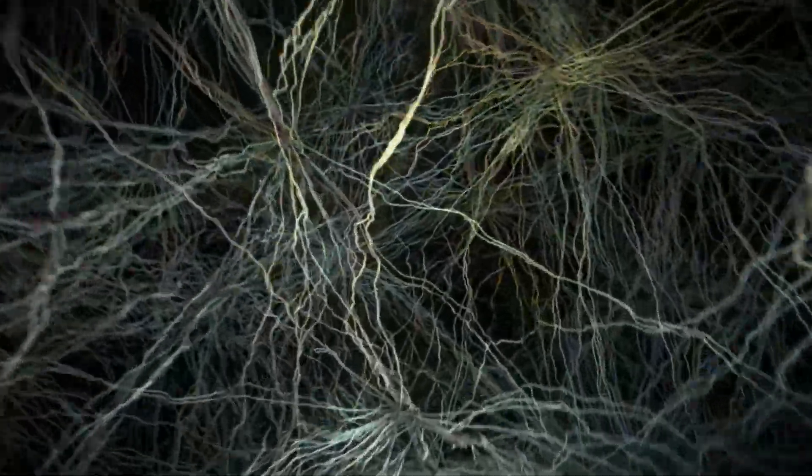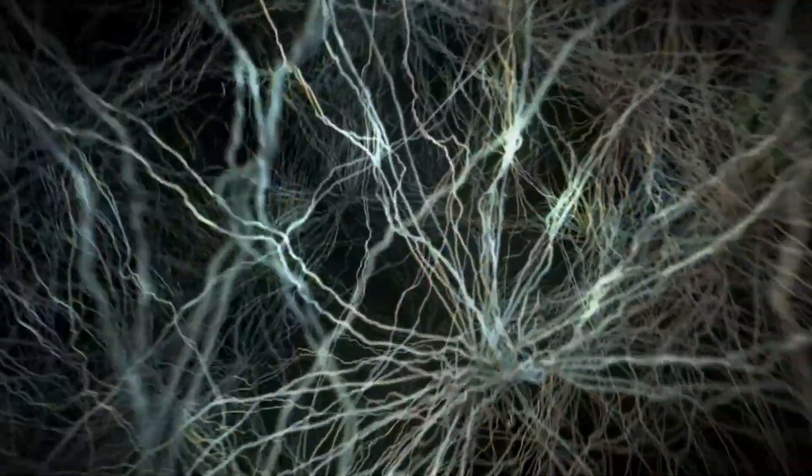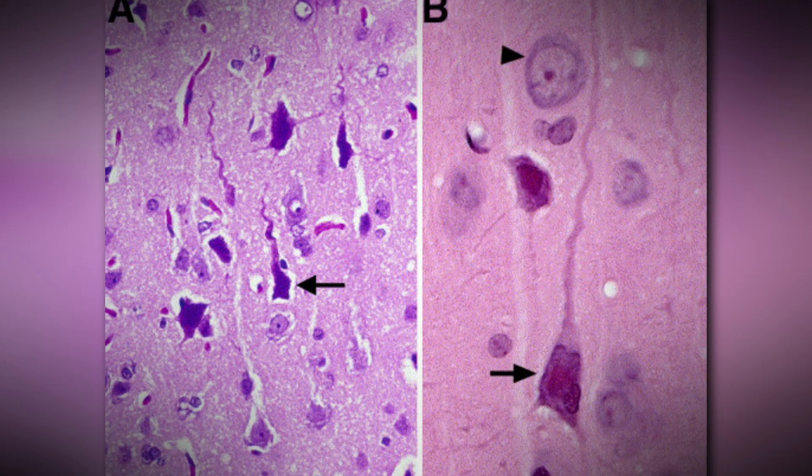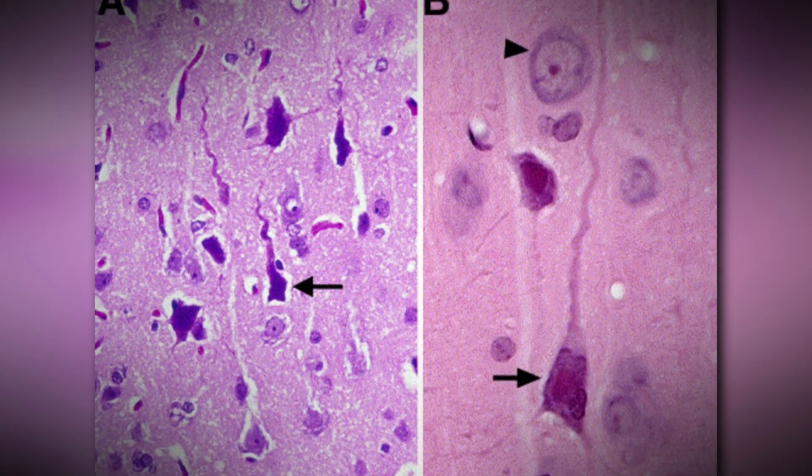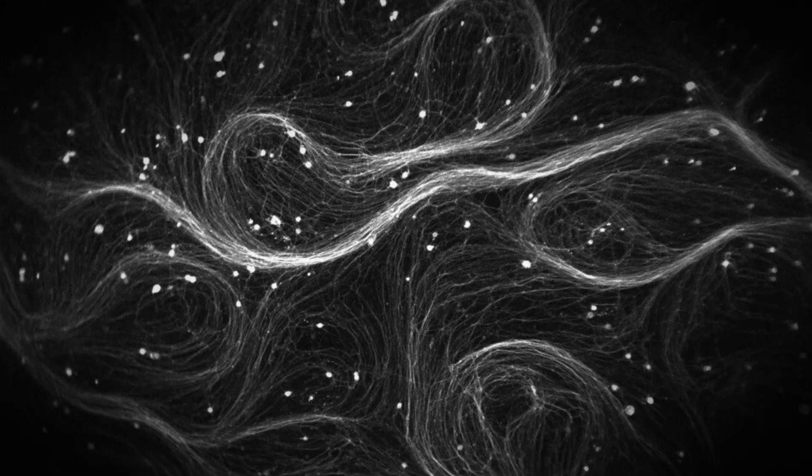While they were initially considered as a sign of neurotoxicity, it has been suggested that they may also represent a protective mechanism or a mode of death. Dark neurons can be distinguished from degenerating neurons with experience and proper fixation techniques. They are not a normal part of the brain tissue and are considered an artifact.